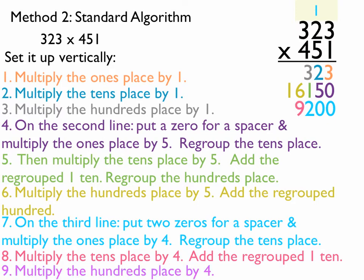And finally, multiply the hundreds place by 4. So, 3 times 4 will give me 12. Since we ran out of space, I'm going to go ahead and rewrite all that stuff right here real quickly.